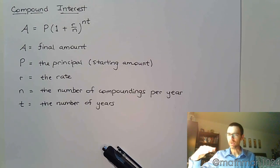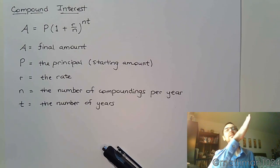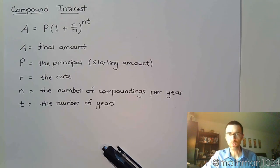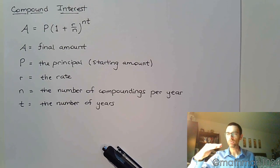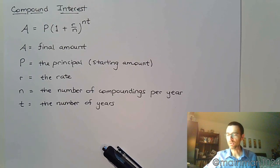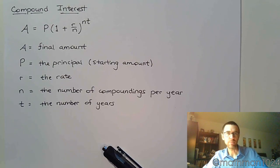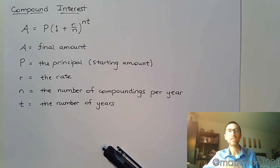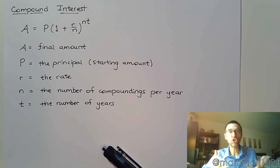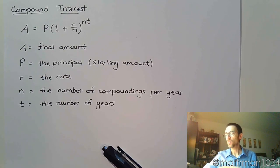The more money you have, the next time you earn interest it's going to be on a higher amount, which means you earn more money, and so on. It's just a snowball effect.